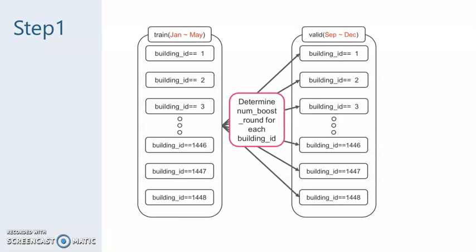In step 1, we decided the period of train and validation. And we make a validation set for each building ID. After training the model, we check the best numboost round for each building ID using the validation set.